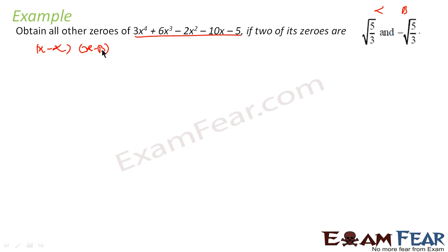Once (x − alpha)(x − beta) divides the degree-4 polynomial, the quotient will be of degree 2, because dividing a degree-4 polynomial by a degree-2 factor gives something of degree 2. From that degree-2 quotient, we can easily find the other two zeros. So let's do that.